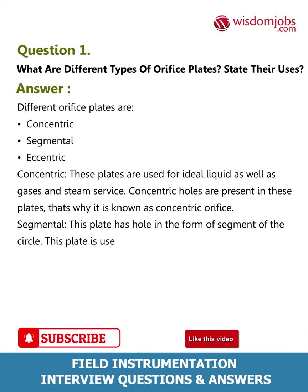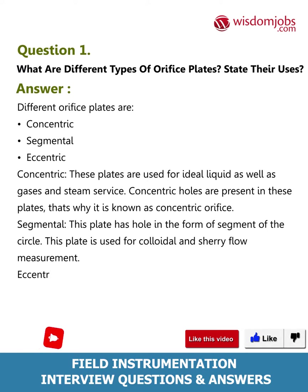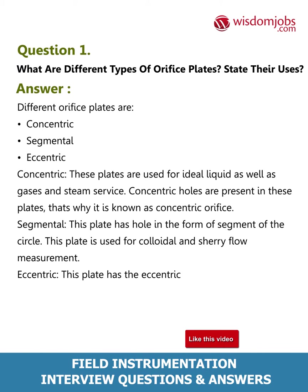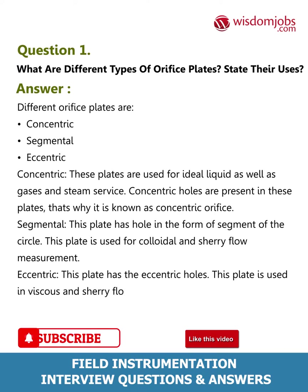Segmental: This plate has a hole in the form of a segment of the circle. This plate is used for colloidal and slurry flow measurement. Eccentric: This plate has eccentric holes. This plate is used in viscous and slurry flow measurement.